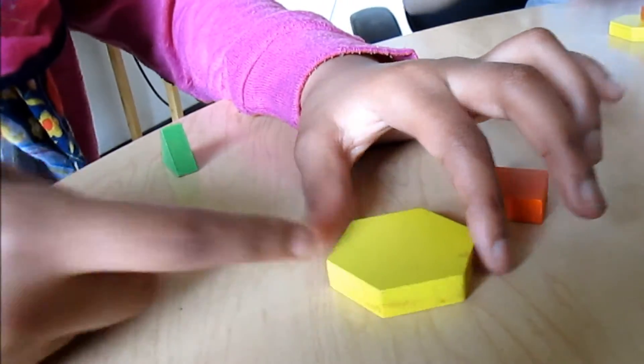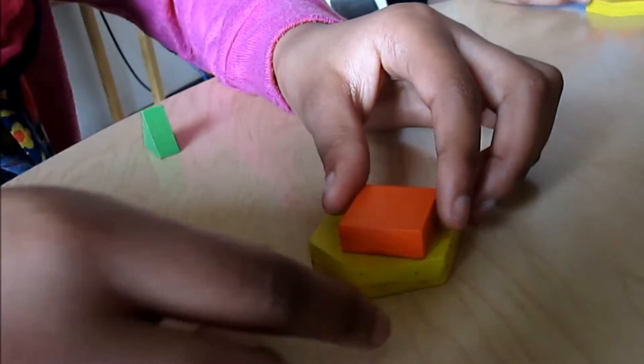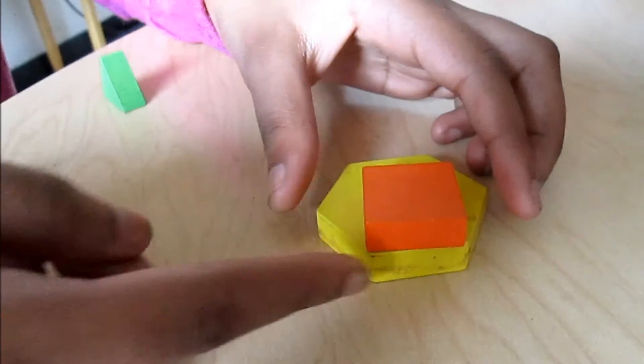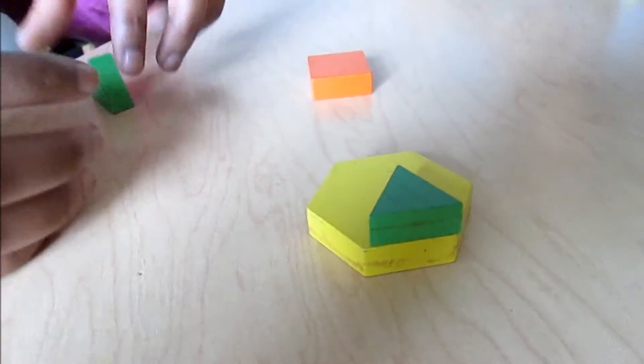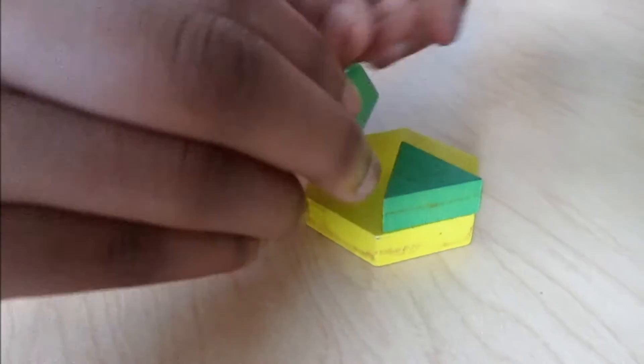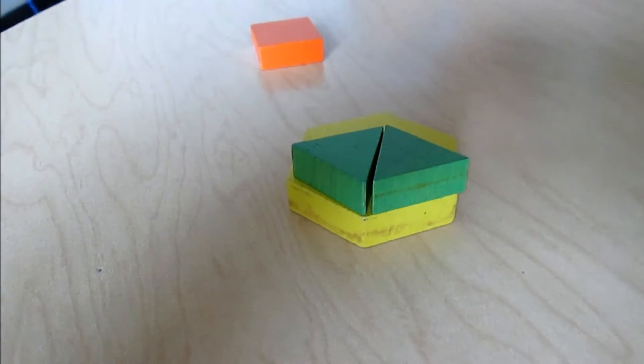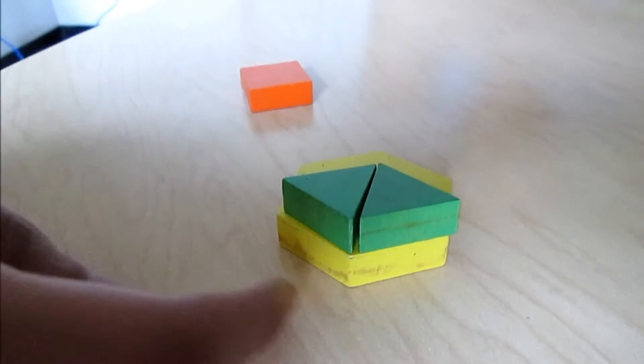The angle in this hexagon is obtuse because it's wider than 90 degrees, you can see right here. And this is 60, and this is 60. So if you multiply 60 times 2, you'll get 120 for this angle.